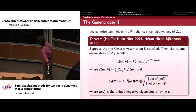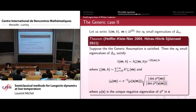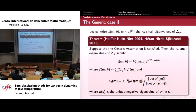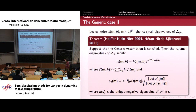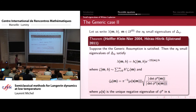Under this generic assumption, the theorem of Helffer-Kliener pushed further by Hérau-Hitrik-Sjöstrand, and also proved by Bovier-Gayrard-Klein, gives: the N_0 small eigenvalues lambda_k satisfy lambda_k ~ h * zeta(M_k, h) * e^{-2S(M_k)/h}, where S(M_k) = sigma(M_k) - phi(M_k), and the prefactor zeta(M, h) has a very nice expression given by the determinants of the Hessian of phi at the critical points: sqrt(|det(Hess phi at saddle)| / det(Hess phi at minimum)) times an explicit negative eigenvalue of the Hessian at the saddle point.